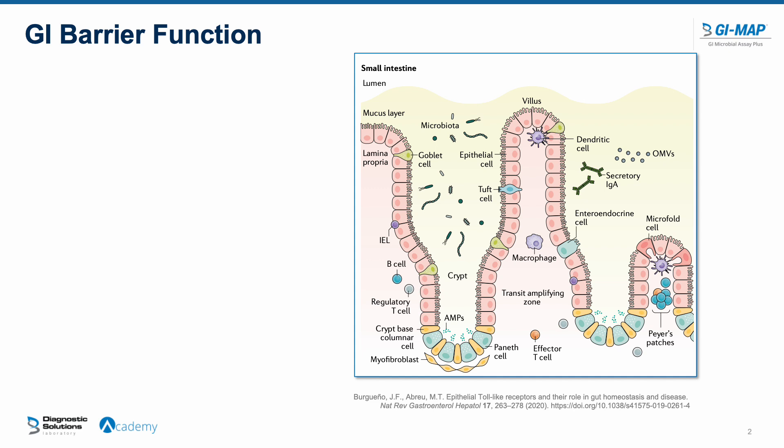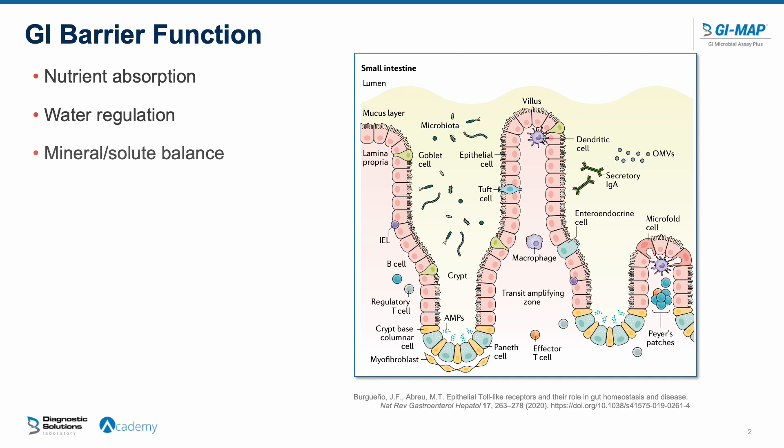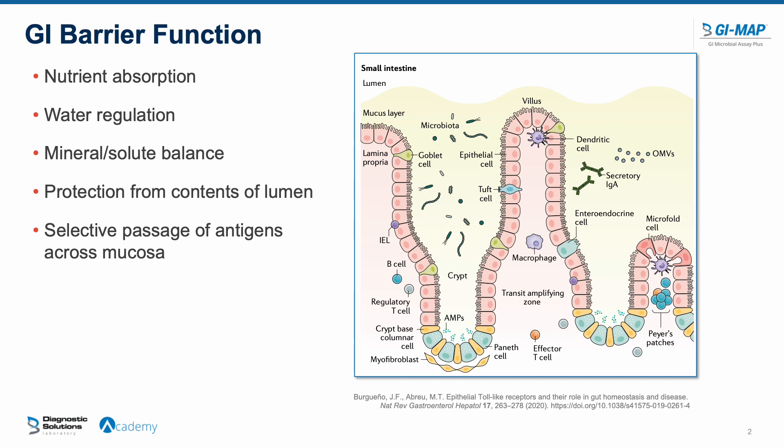Our GI barrier has a lot of functions in our body that are really important to overall health and gut health. The barrier is responsible for nutrient absorption from the lumen of the gut into the body, water regulation, regulation of the balance of minerals and solutes. The barrier is protective from the contents of the lumen — the lumen is technically the outside of our body — and selectively allows passage of antigens across the mucosal layer into our body.